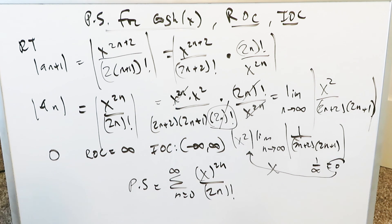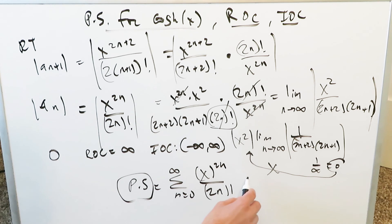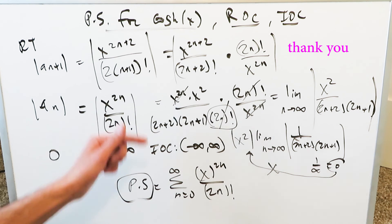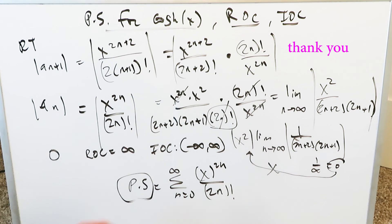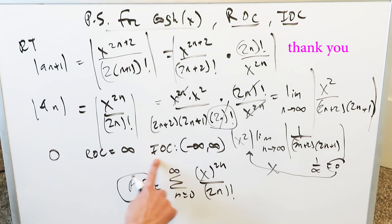That brings us to the end of the video. We have the power series rule, which generates the standard series with even-numbered exponents and factorials. Thank you, have a good day.